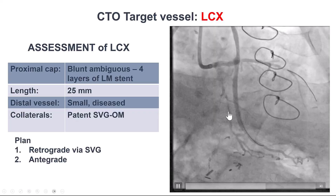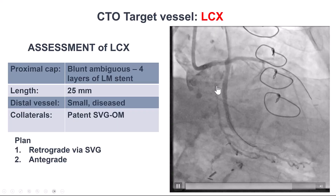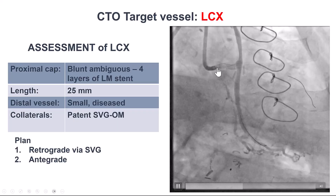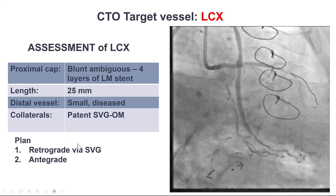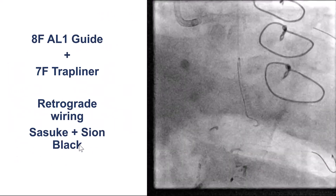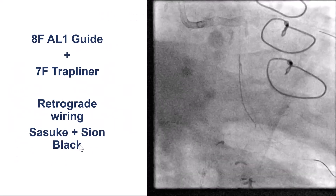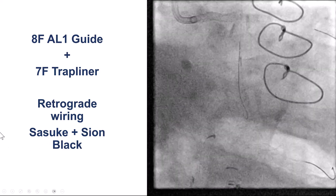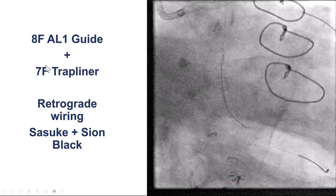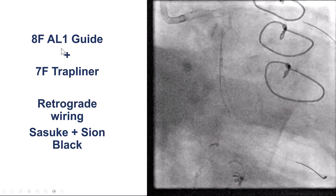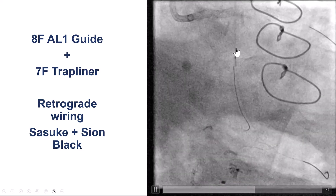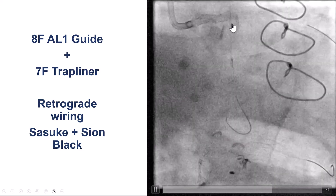Our plan was to go retrograde via the saphenous vein graft, try to resolve the proximal cap ambiguity, and then try with antegrade crossing. We did use big guides by femoral approach: 8 French AL1 for the vein graft with a 7 French Trapliner, along with an EBU for the left main.